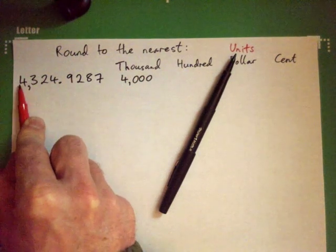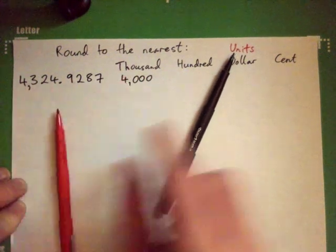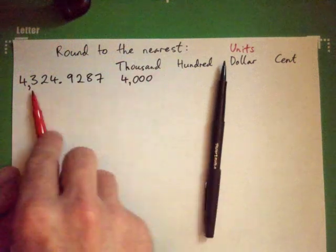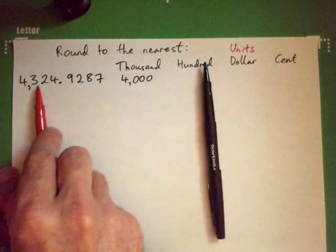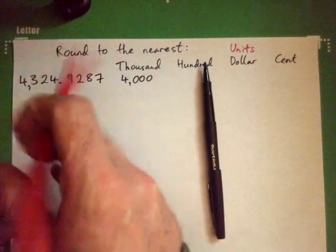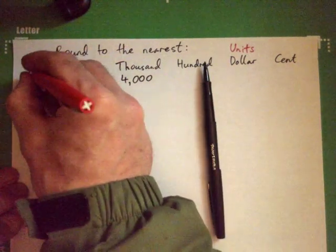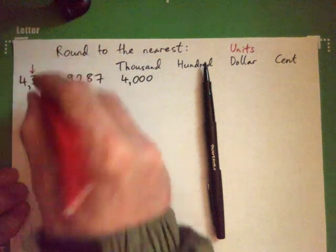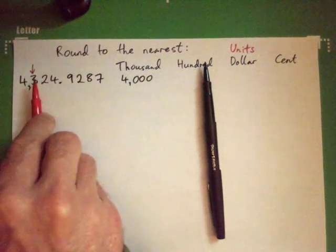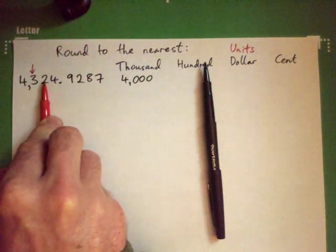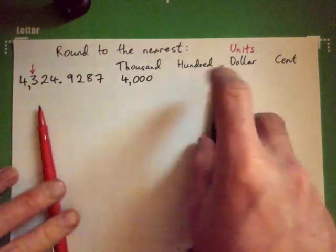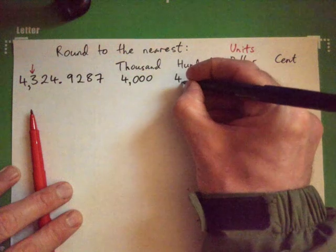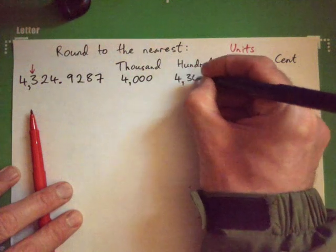So we go down to the four. To the nearest hundred, we look at the three, but after the three there is a two, so we round down — and so that is 4,300.